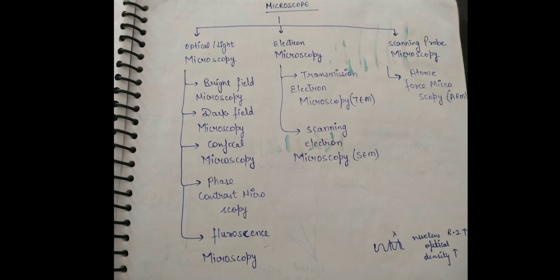Microscope is of three types: first, optical or light microscope; second, electron microscope; and third, scanning probe microscope. Optical microscope is of five types: bright field microscope, dark field microscope, confocal microscope, phase contrast microscope, and fluorescence microscope.